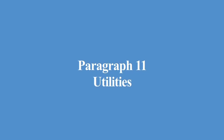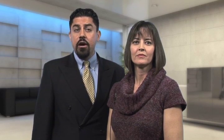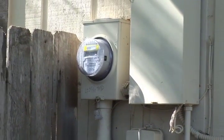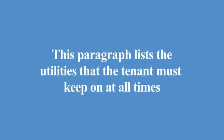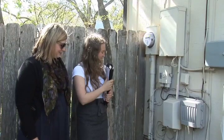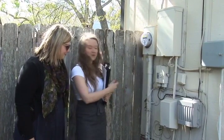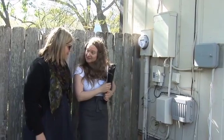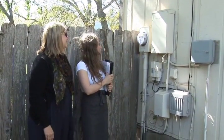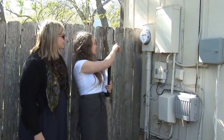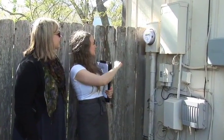Paragraph 11, Utilities. This paragraph explains that the tenant is responsible for all utility fees and costs to the property unless the lease states otherwise. It also lists the utilities that the tenant must keep on at all times if they are available. Before signing the lease, the tenant should determine if these utilities are available to the property and are adequate for their use.